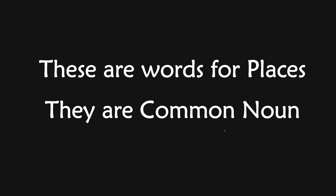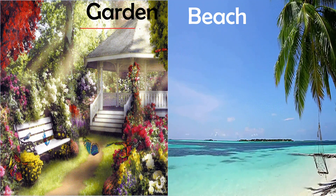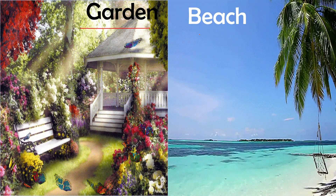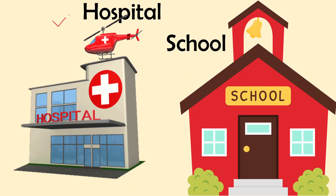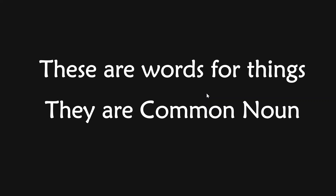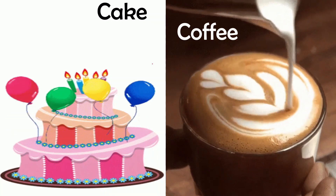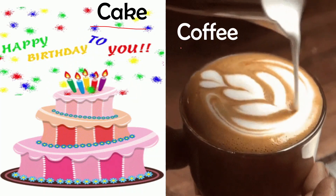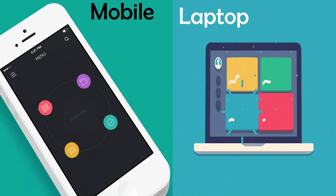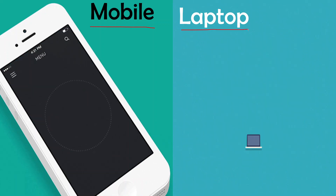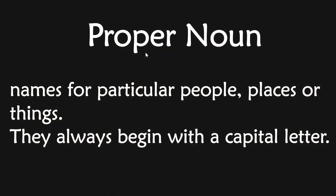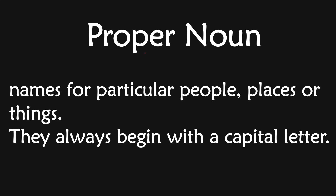Words for places are also common nouns. Garden, beach, hospital, and school all come under common noun. Words for things — cake, coffee, mobile, and laptop are common nouns. I hope it is now well explained what a noun and a common noun are.